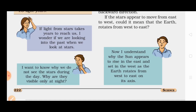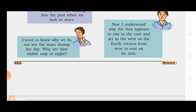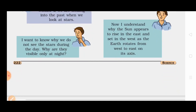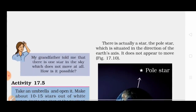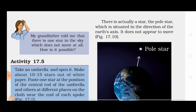The earth is moving from west to east, so the stars appear to move from east to west. This is also why the sun appears to rise in the east and set in the west — because the earth rotates from west to east on its axis.